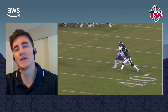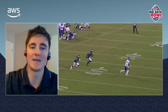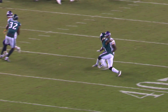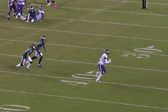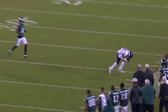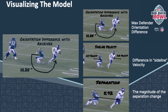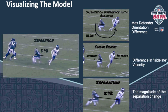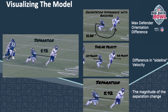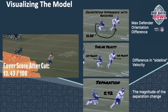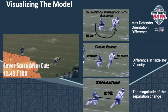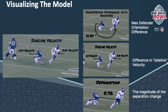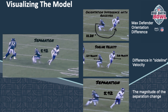I didn't want to just build an evaluation model without being able to explain what's going on. Here you can see Stefan Diggs in the white jersey working Ronald Darby on a 10-yard out route. The pictures on the right give a glimpse of some of the features in the model. First, you have the orientation difference relative to the receiver — right after Diggs makes his cut, Darby gets completely turned around, and the model captures this by identifying the maximum orientation difference, which is around 111 degrees.